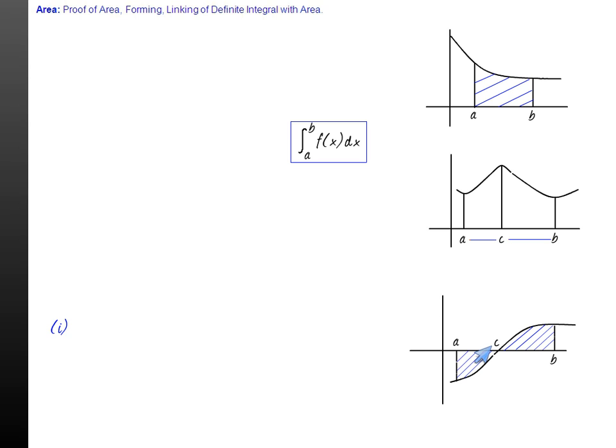So the actual area for which a real technocrat may be interested will be integral a to c of modulus f(x) dx plus integral c to b f(x) dx with or without modulus sign because that area is positive. So this is the correct area. In case there is symmetry then this can be avoided.